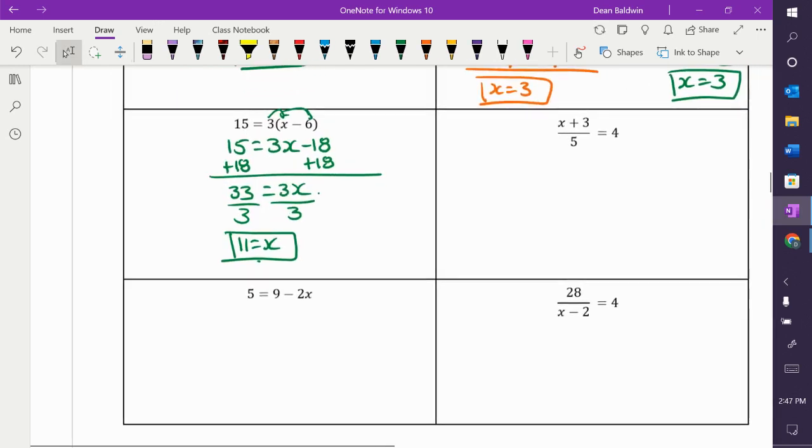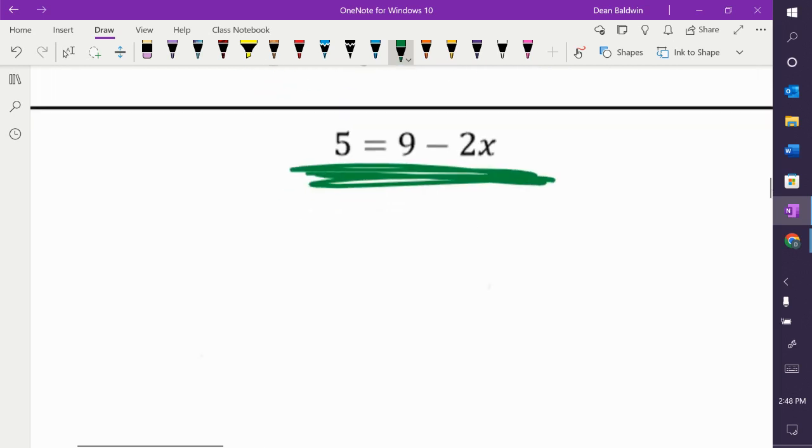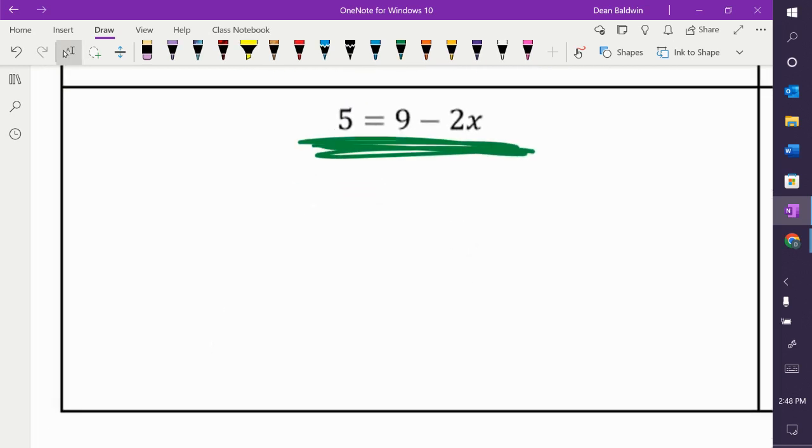Let's do this one here, right below it, before we do those last two. All right. Five is equal to nine minus two X. What do you want to do first here? Subtract the three. No, no, no, no, no. I'm doing this one. Sorry. All right. Here. We'll just zoom in on it. There we go. Okay. What do we want to do first?